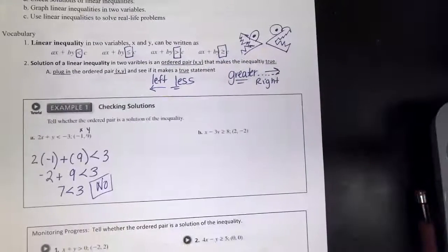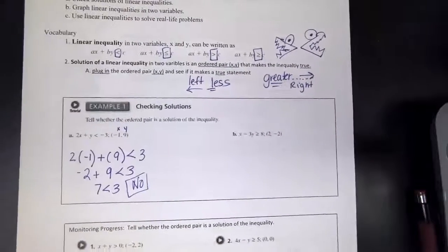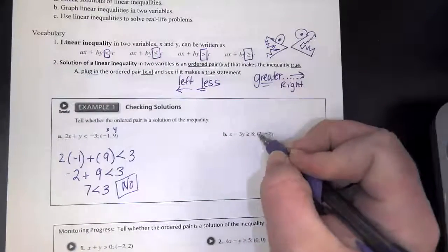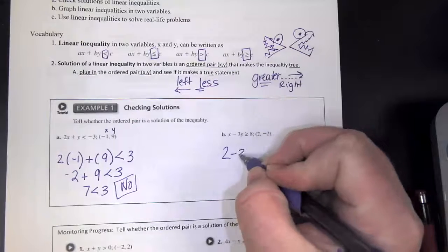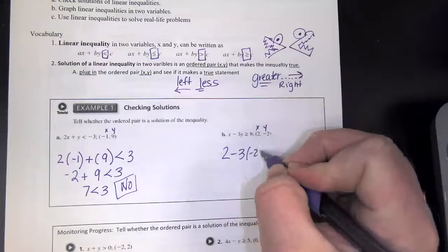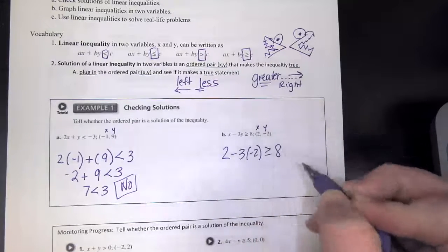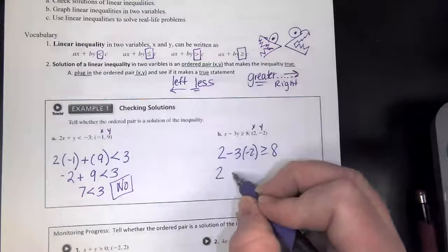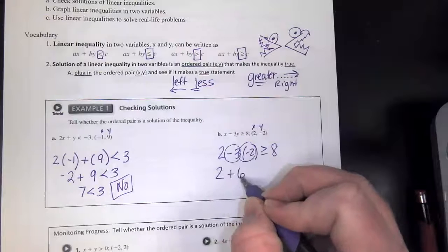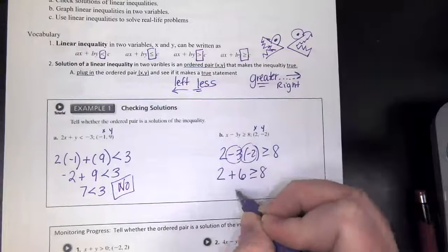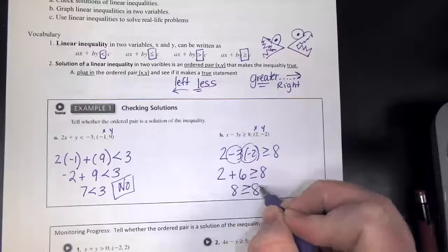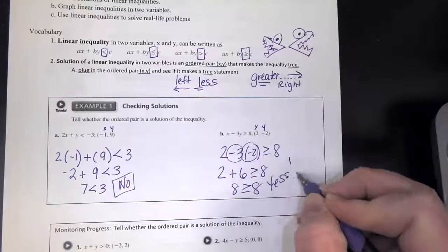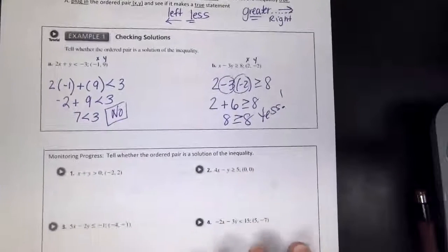Two times negative one is negative two plus nine is less than three. Negative two plus nine is seven. Is seven less than three? Negatory, that would be a no, that is not a solution. Okay, that does not work. Let's try this one. Let me, I don't think I can increase my size here. Two minus three.